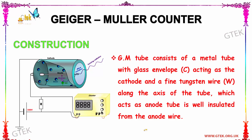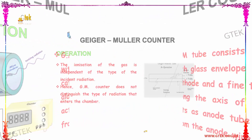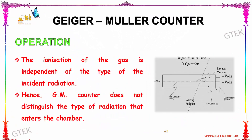Let us further see about the construction and operation. The ionization of the gas is independent of the type of incident radiation. Hence, the Geiger-Müller counter does not distinguish the type of radiation that enters the chamber, as you can see in the picture on the right side.